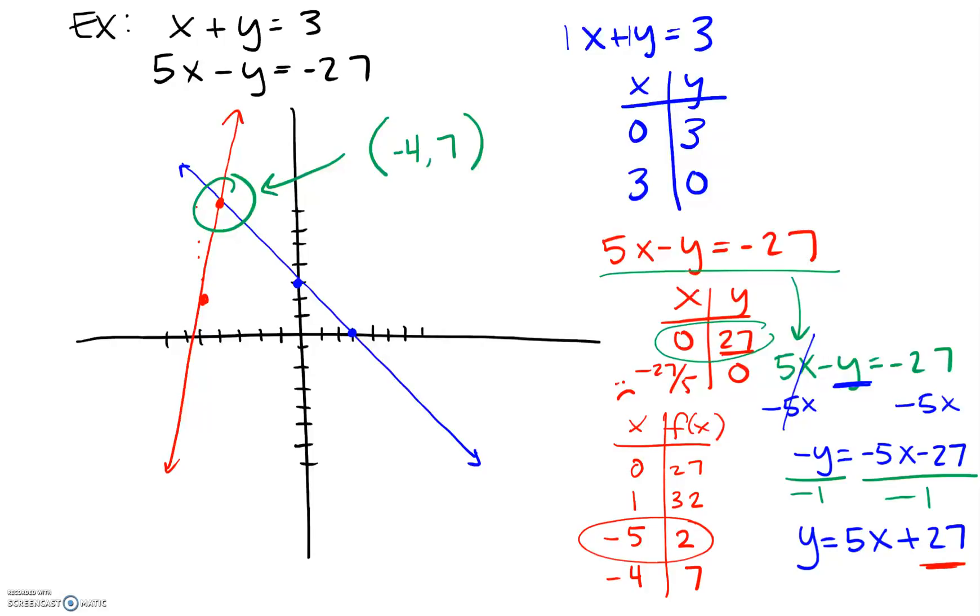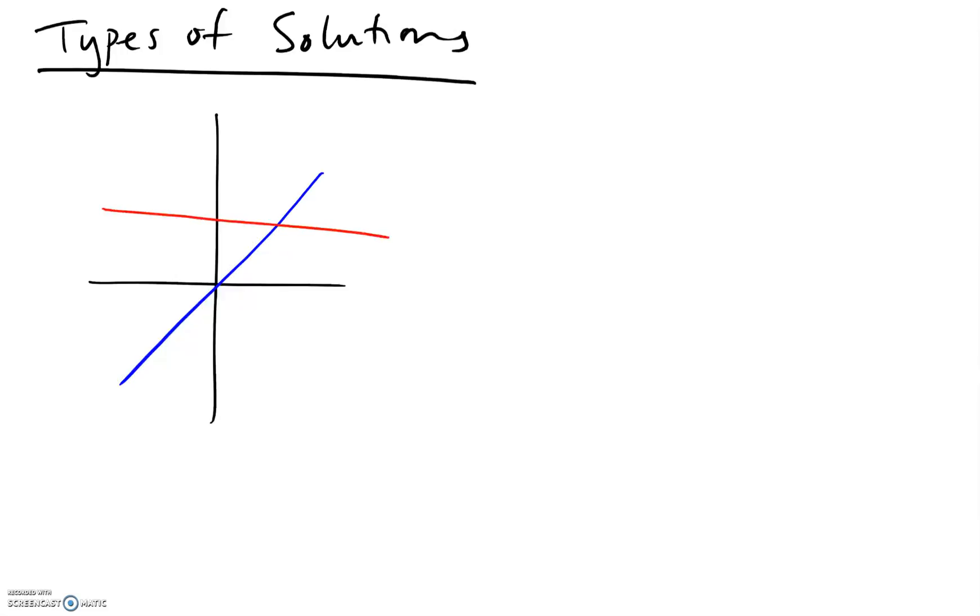So with that in mind, let's talk about the types of solutions that can happen. We have three different things that can happen. One is what we just saw - you graph your two lines and they intersect at one beautiful point, where your solution is some $x, y$, one solution, life is good. We call these particular systems of equations independent and consistent.